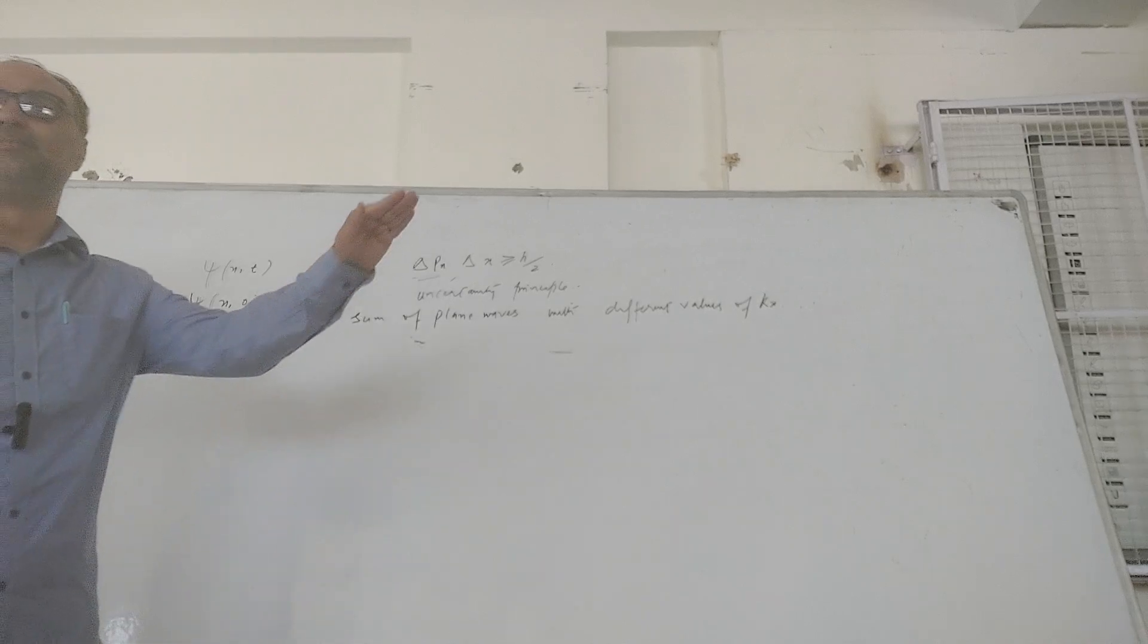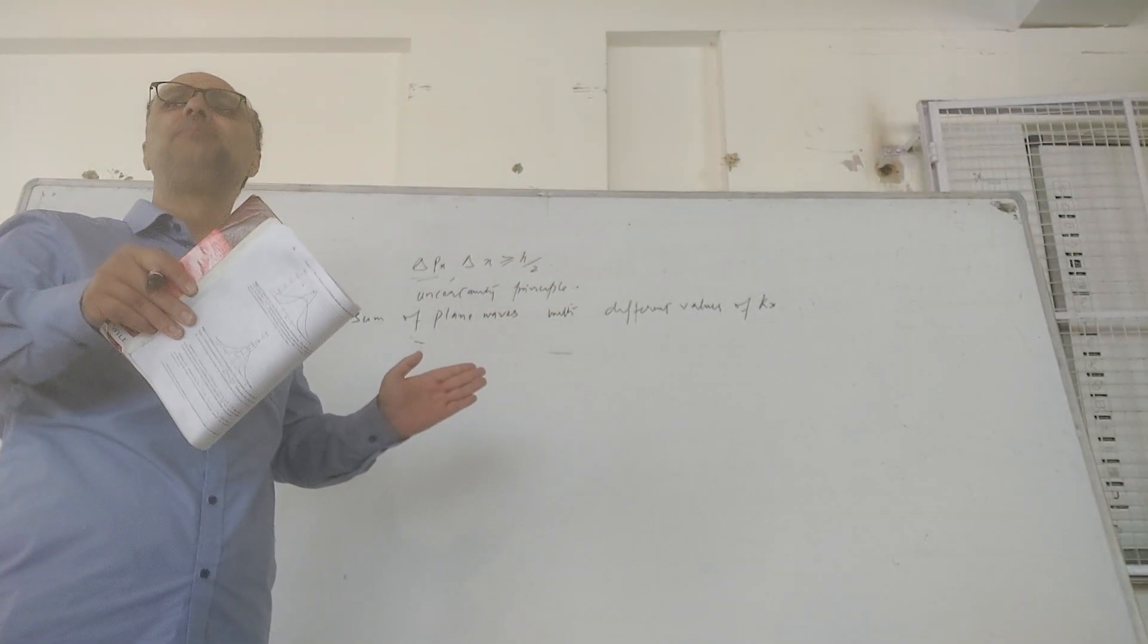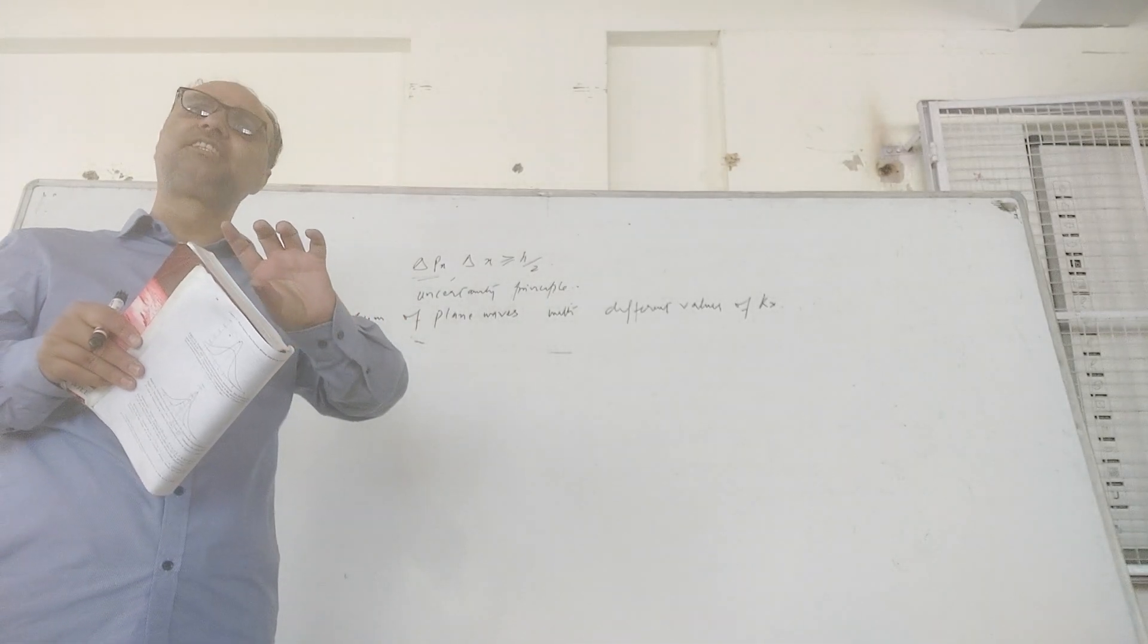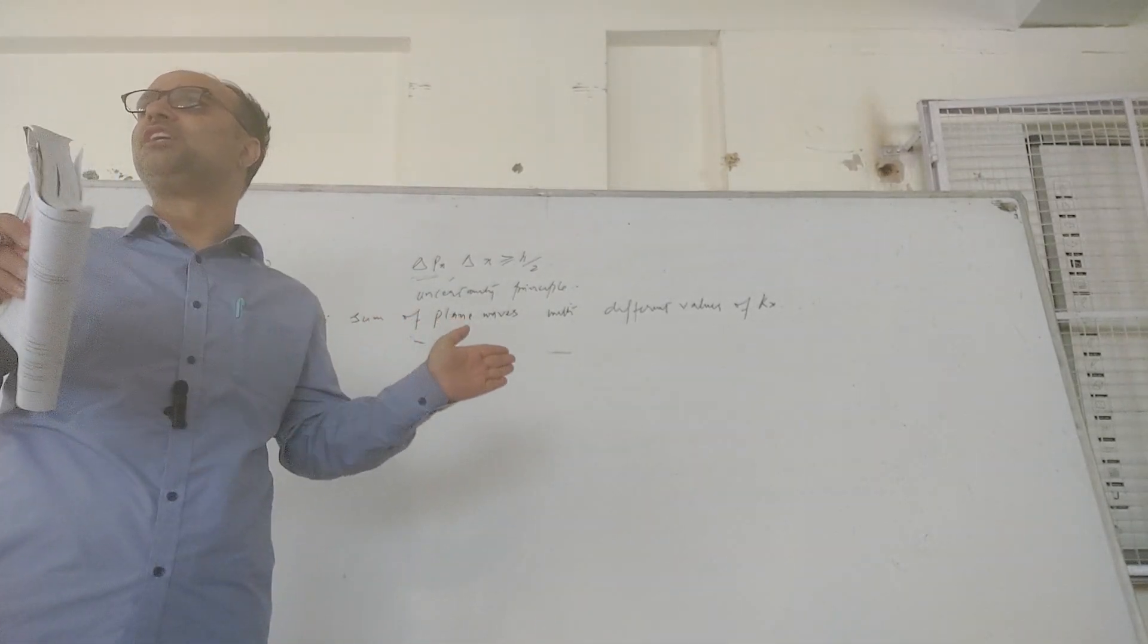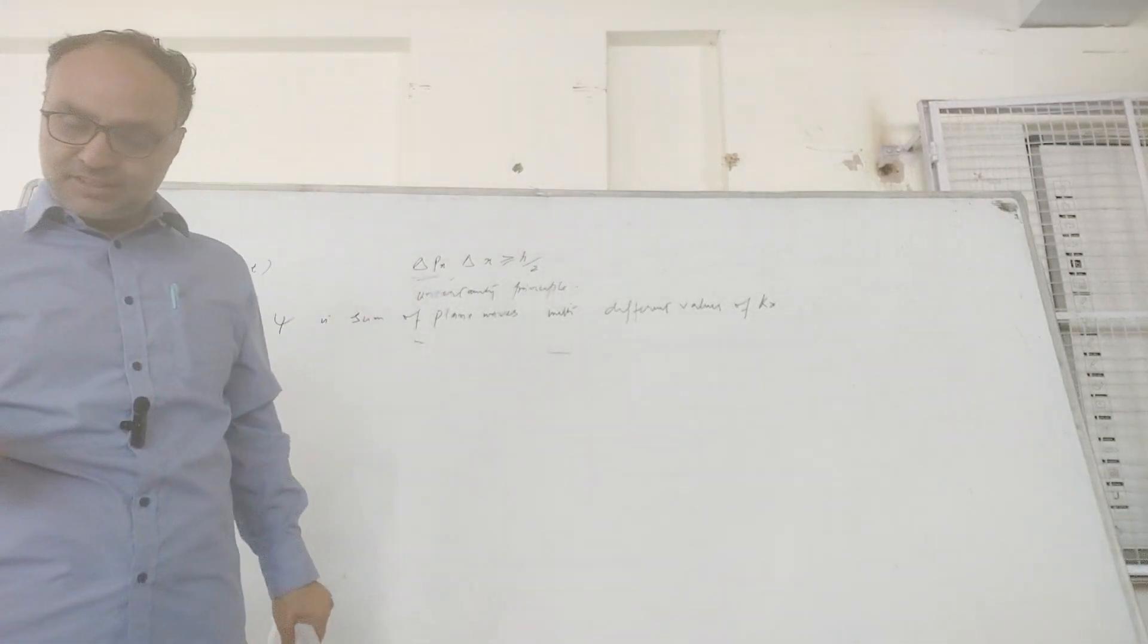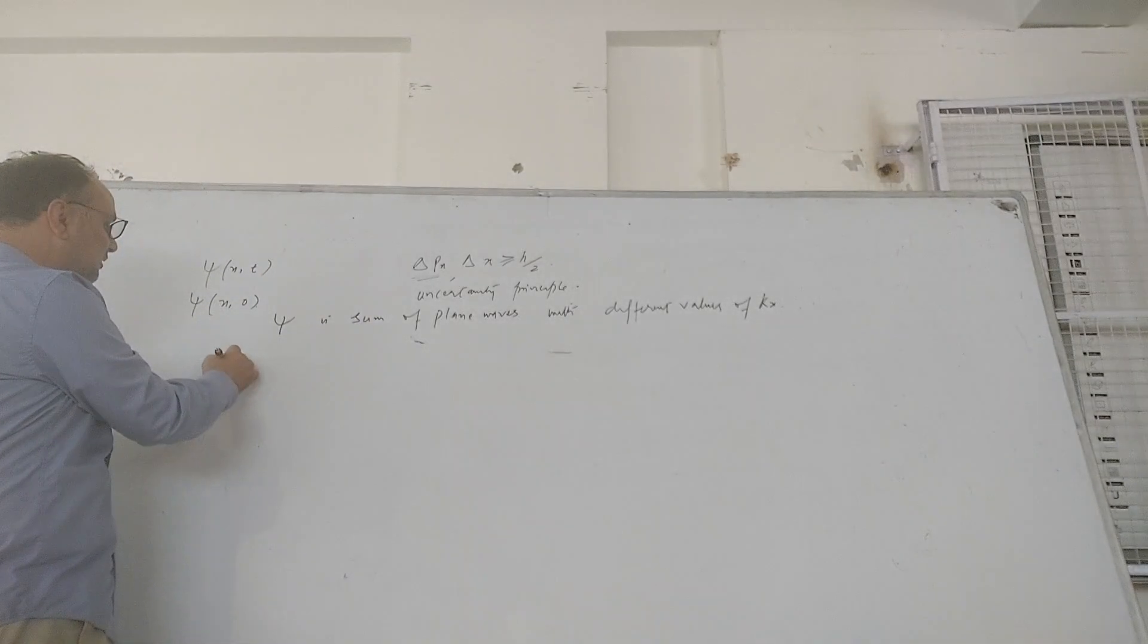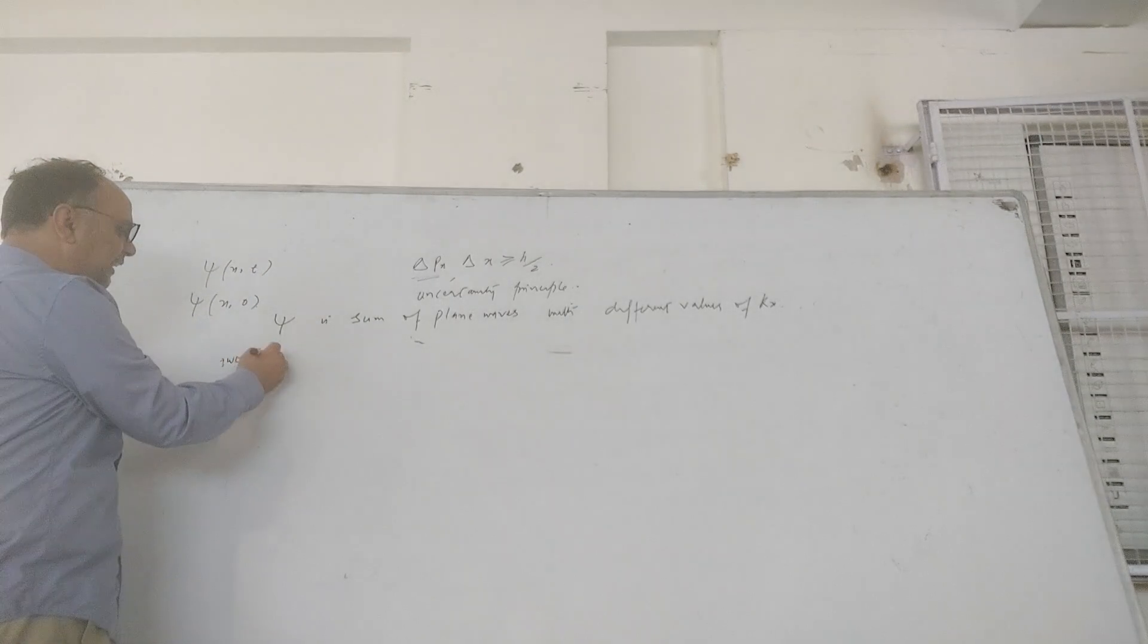So we will have a sort of real wave. If we superpose two waves, it will mimic, it will have a characteristic as if we are studying two waves which are superposing together. Now the two waves, if we do here, omega t minus kx.